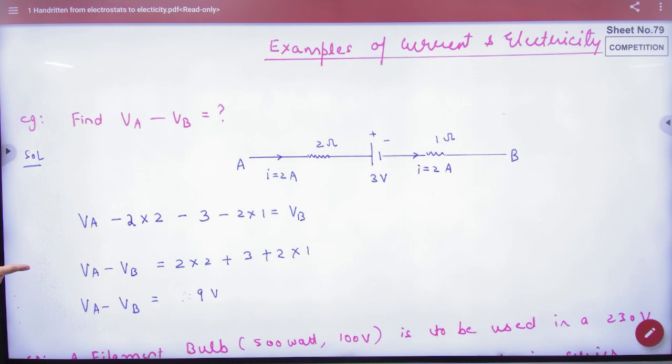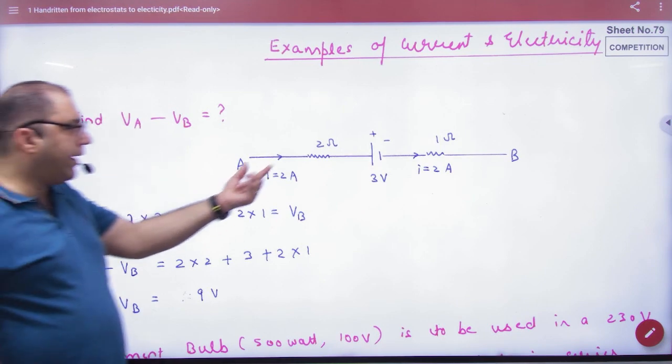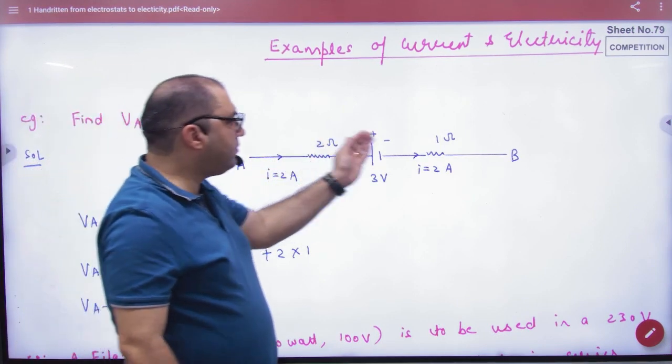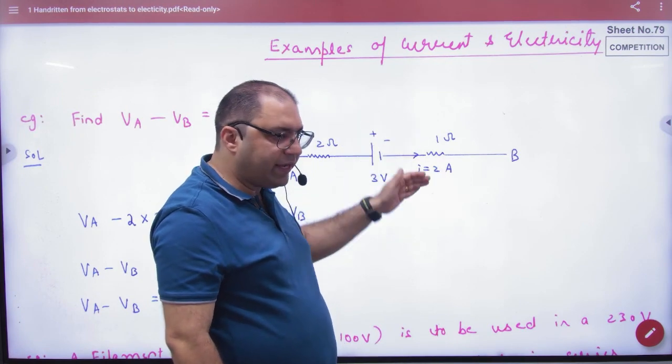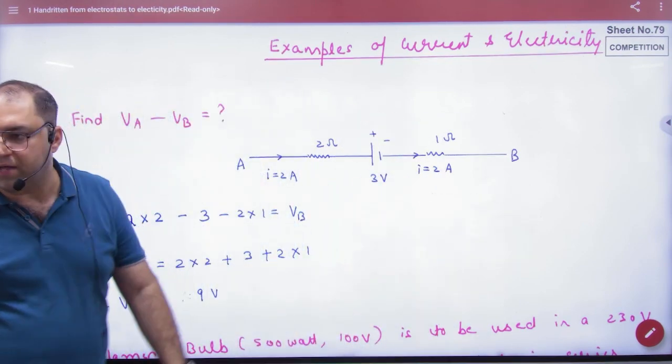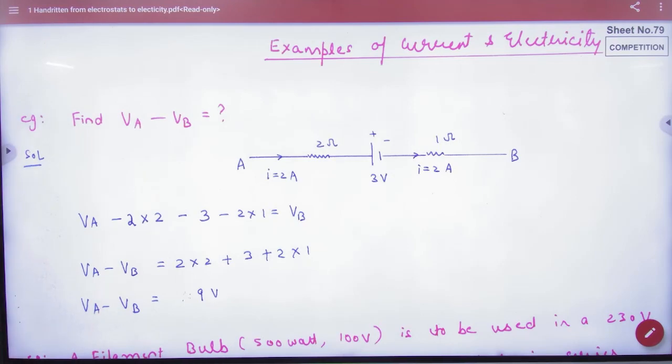So first, VA minus I into R, plus the battery, plus and minus 3, current going in the direction minus 1 into 2, equal to VB. So VA minus VB can be calculated.